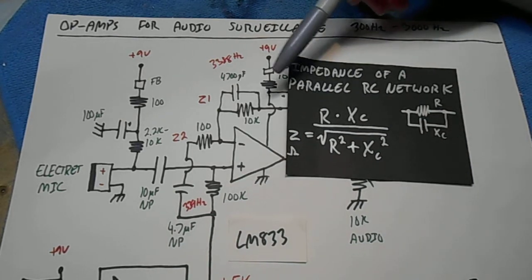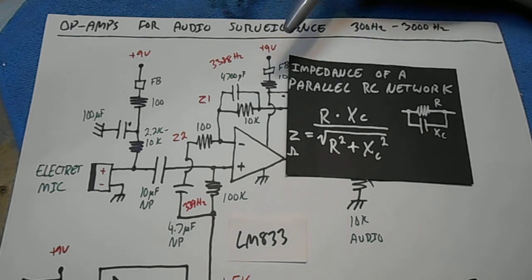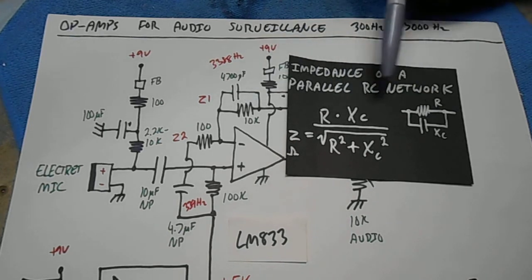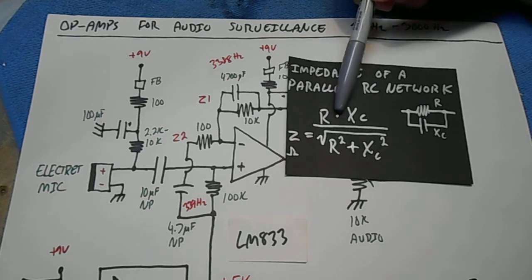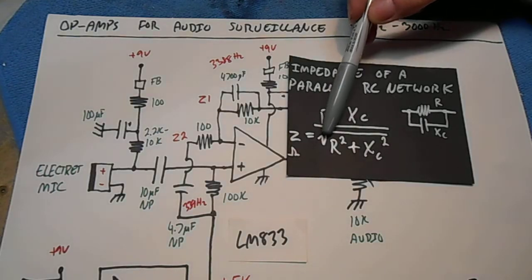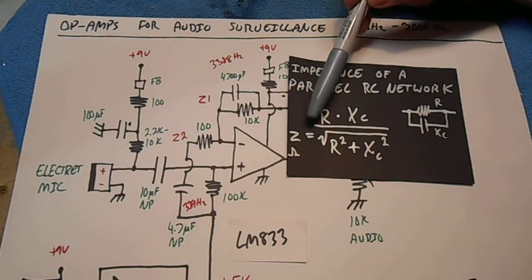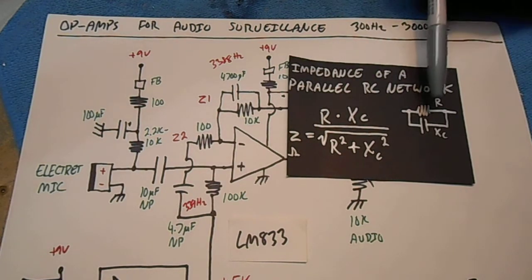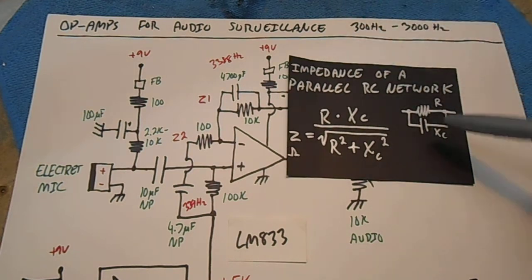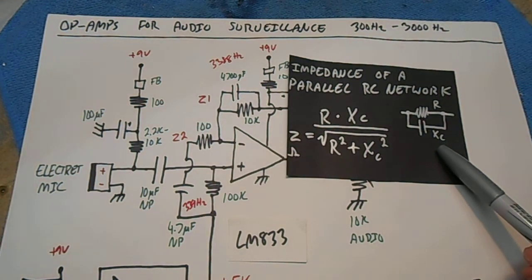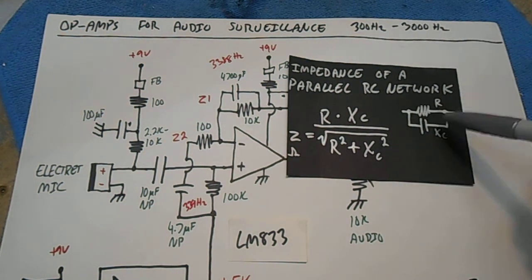To determine the impedance of a parallel capacitor and resistor, you need to use this equation. R times X sub C divided by the square root of R squared plus X sub C squared. And that will be the impedance of a parallel resistor and capacitor, where the X sub C is the reactance of the capacitor that you determined in the previous equation.